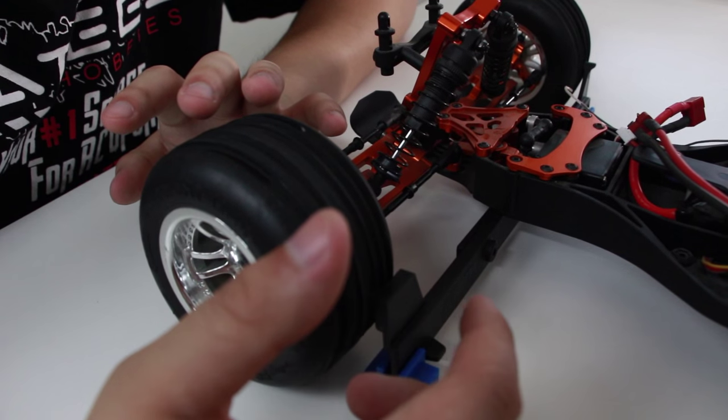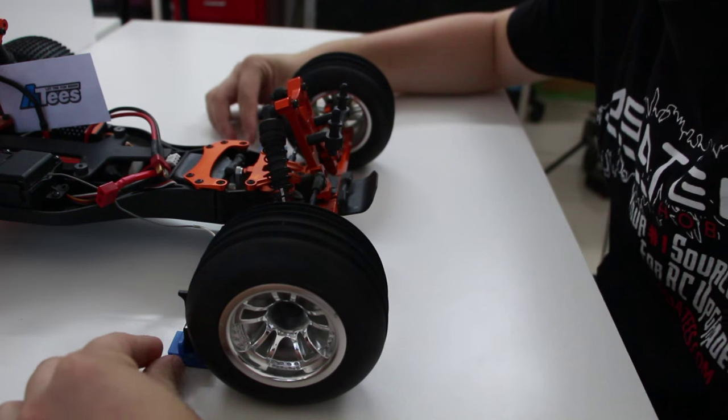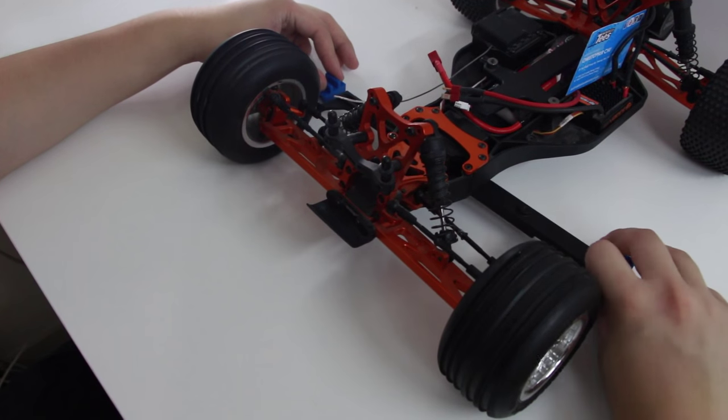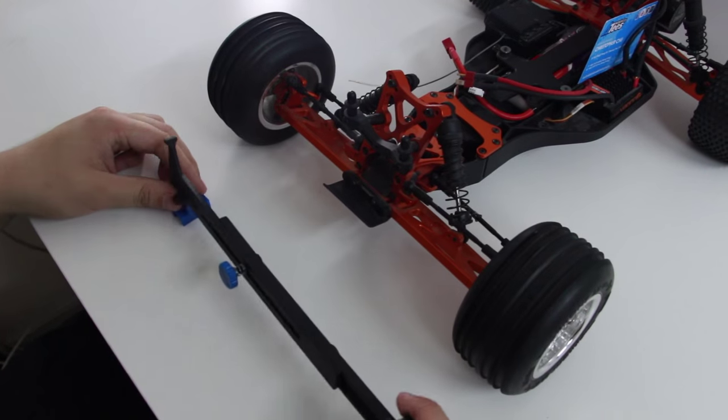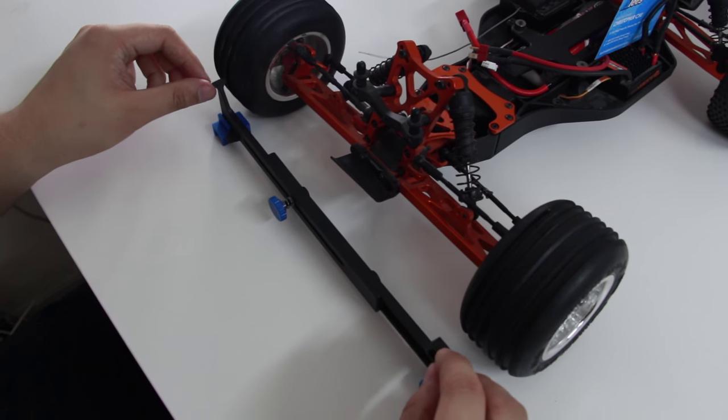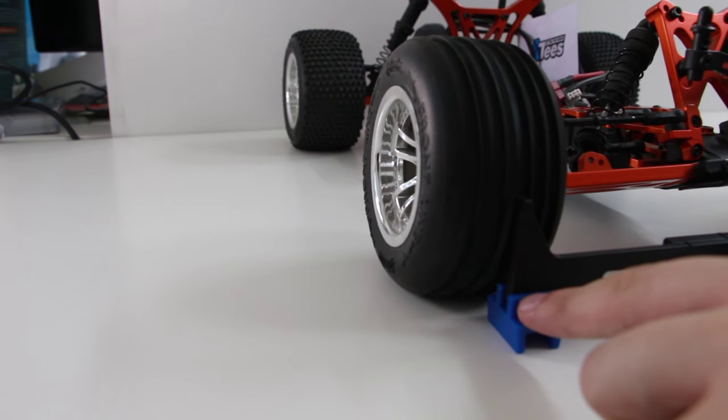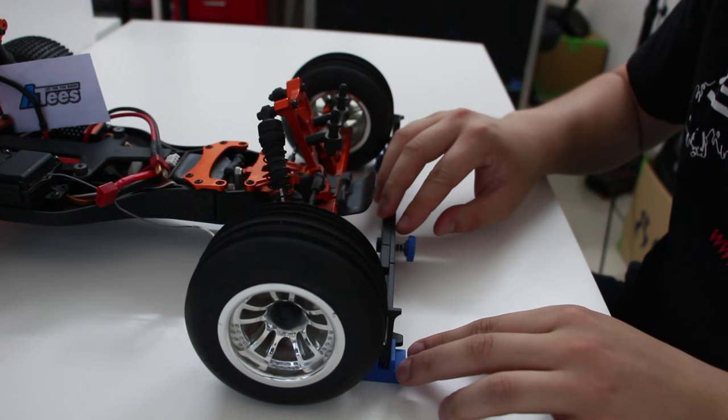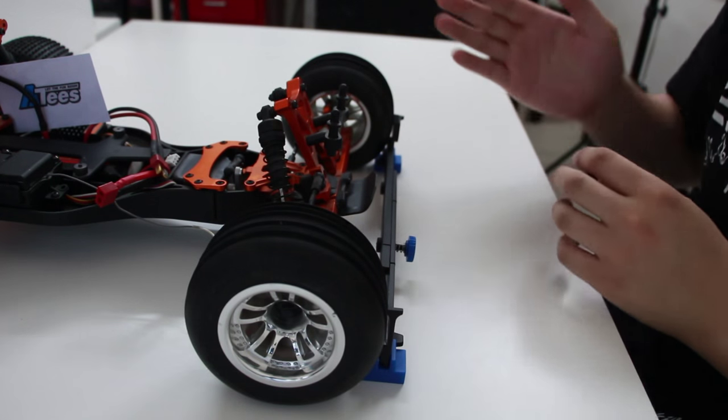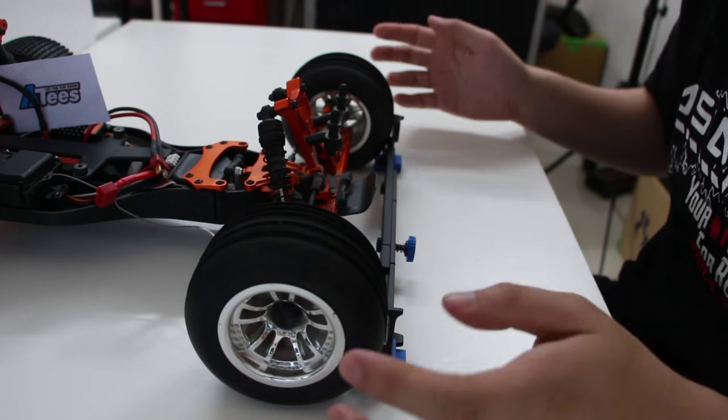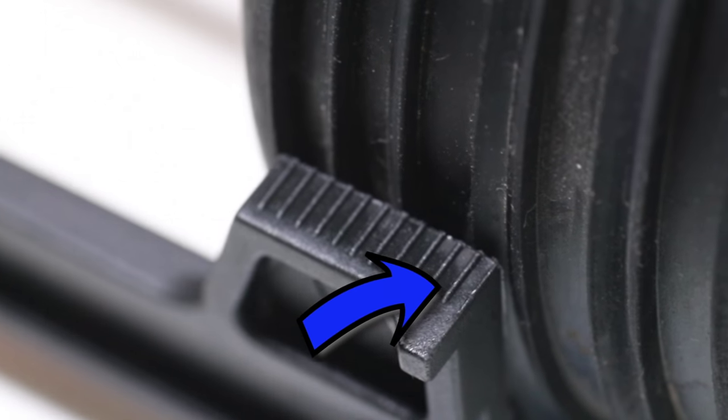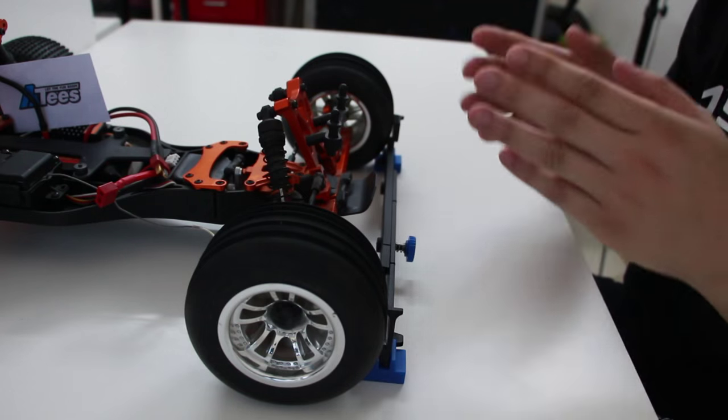Once you have that all lined up and ready to go you're just going to remove this, take it out, pull it out from under your chassis and place it back into the front of your car. You're going to put the left side back on that reference point and on the right side you should be able to see that your reference point is off now and that's because you have toe in. Right now we have about one degree of toe in. Each one of these little notches on the right side shows one degree.